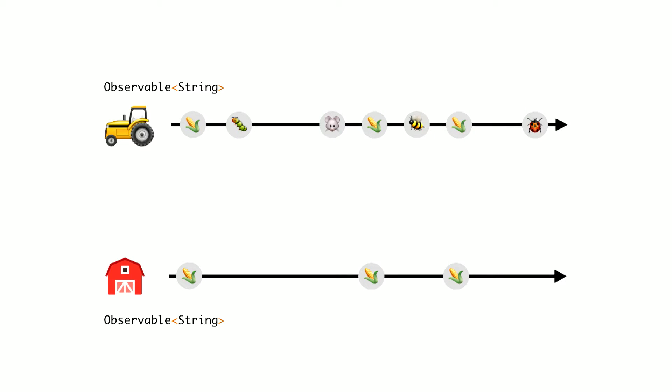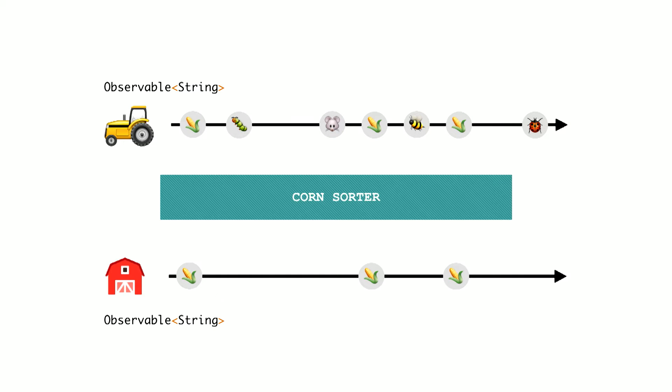I'm going to use the two interchangeably, and I'd encourage you to as well. Stream is a lot more visual and makes more sense. Observable is what you actually write in your code. And here is our tractor — it's going around collecting streams, and we have a barn stream. That stream is going to receive the corn as it comes through.